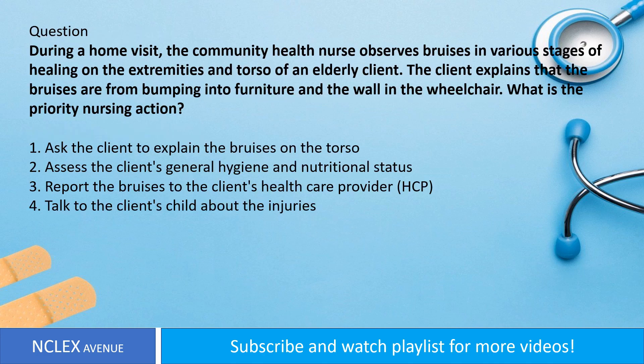Question. During a home visit, the community health nurse observes bruises in various stages of healing on the extremities and torso of an elderly client. The client explains that the bruises are from bumping into furniture and the wall in the wheelchair. What is the priority nursing action? 1. Ask the client to explain the bruises on the torso. 2. Assess the client's general hygiene and nutritional status. 3. Report the bruises to the client's health care provider. 4. Talk to the client's child about the injuries.